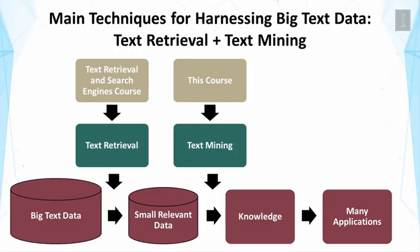The main techniques for harnessing big text data are text retrieval and text mining. These are two very much related technologies, yet they have somewhat different purposes. Text retrieval and search engines covers text retrieval, which is necessary to turn big text data into a much smaller but more relevant text data — the data we need to handle a particular problem or optimize a particular decision. This course covers text mining, which is the second step in this pipeline, used to further process the relevant data to extract knowledge or help people digest text data easily.